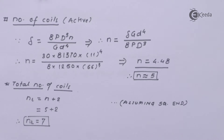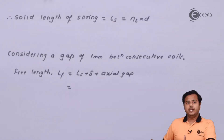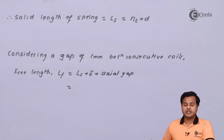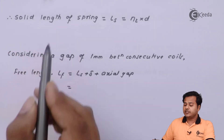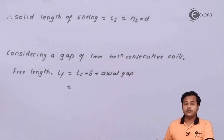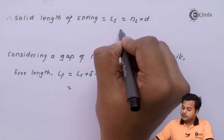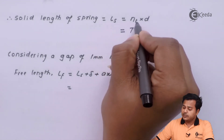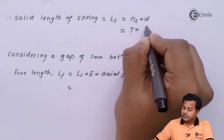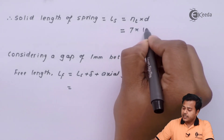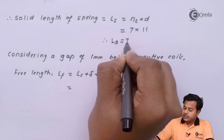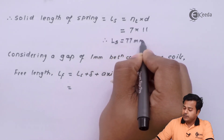With 7 total coils, let us move ahead to find the solid length of the spring. The solid length is given by total number of coils times wire diameter. Substituting the values — 7 total coils and wire diameter d of 11 mm — the solid length comes out to be 77 millimeter.